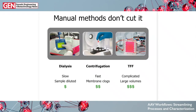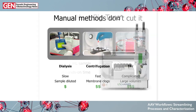When it comes to buffer exchange, manual methods just don't cut it. Dialysis is slow, and you end up with a sample that's diluted. Centrifugation is faster, but if you concentrate your sample at the membrane as you spin it down, you can end up clogging your membrane and end up with aggregation problems. And TFF — tangential flow filtration — is complicated, takes a while to set up, and uses large volumes, so it's not the easiest method to use when you're trying to screen through lots of different buffers.